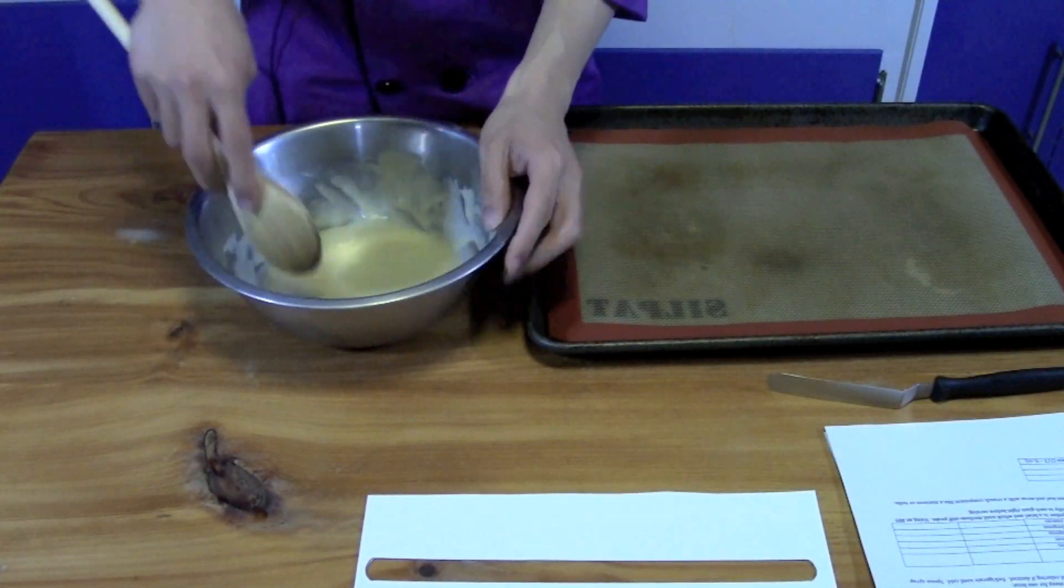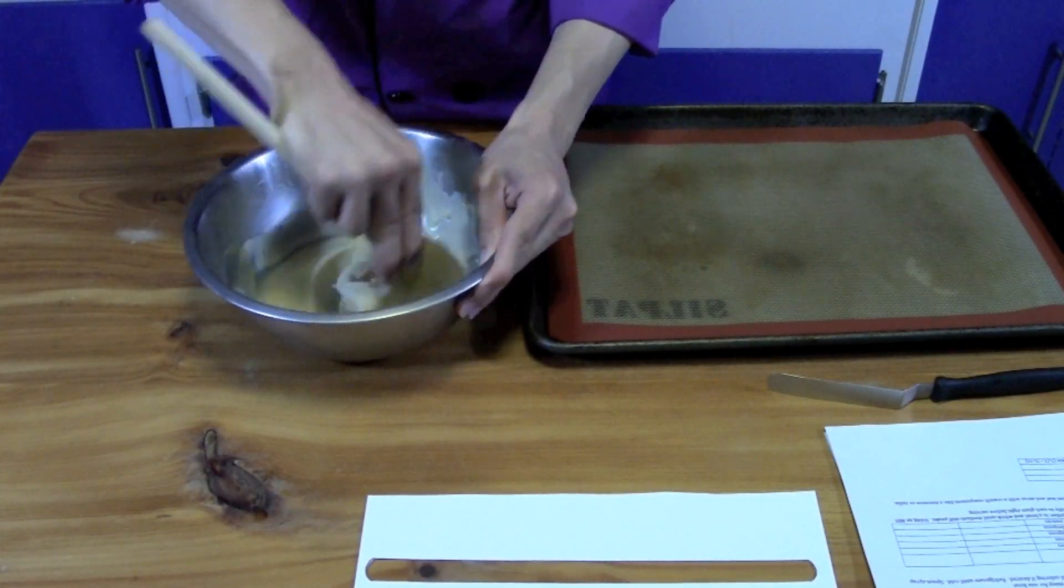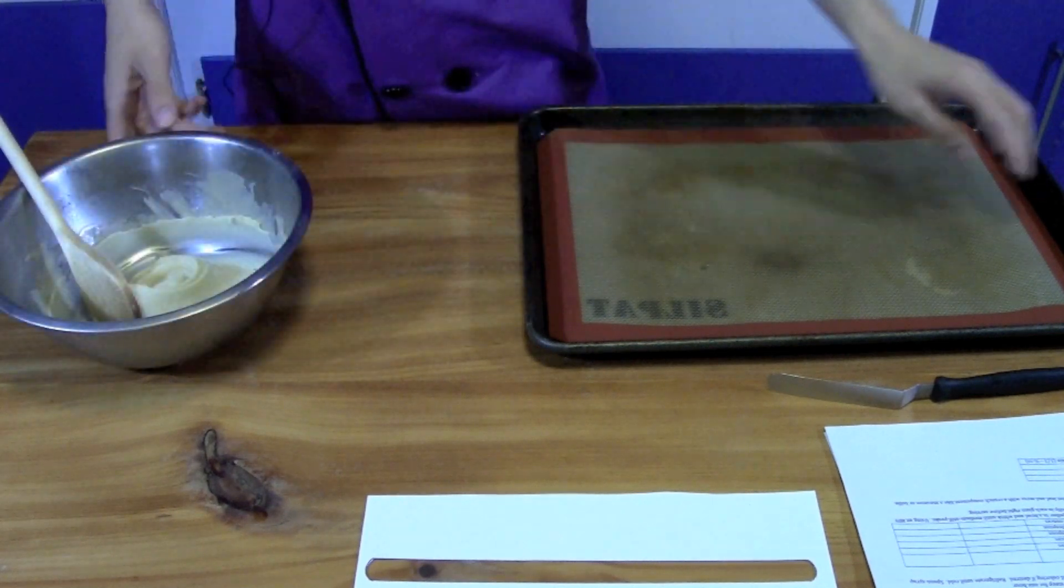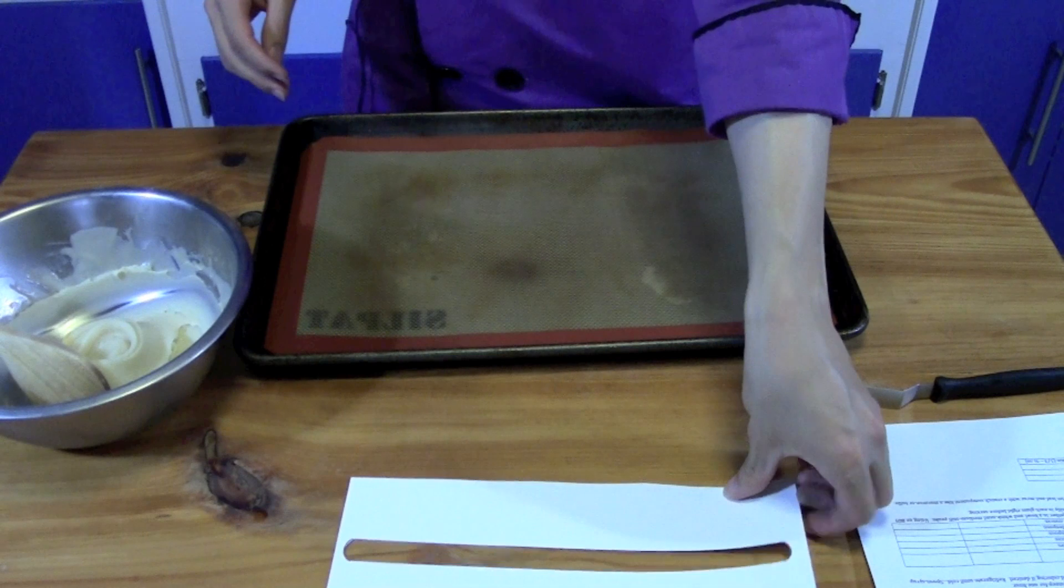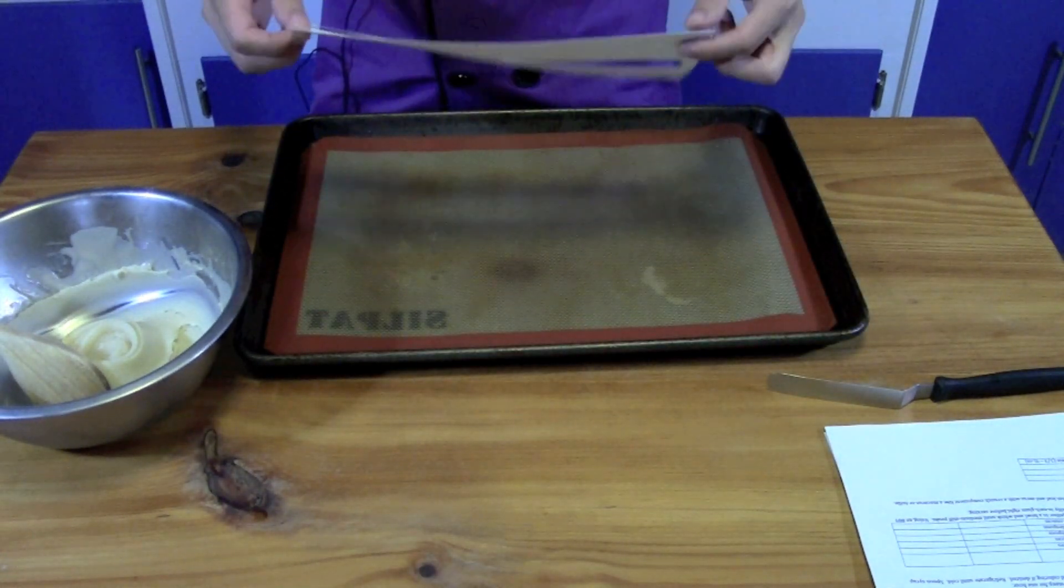In the meantime, we can come back to our tuile paste. You just want to give it a good stir and make sure everything's all nice and mixed together. And then you want to use a silicone mat or a silpat, and we're going to use a stencil to put it on. Now I just made this stencil myself.